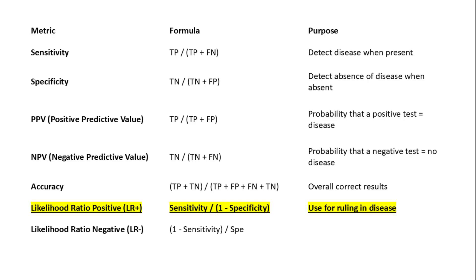Welcome to our presentation on biostatistics. Sensitivity is the ability of a test to detect disease when it is truly present. The formula is true positives divided by the sum of true positives and false negatives.